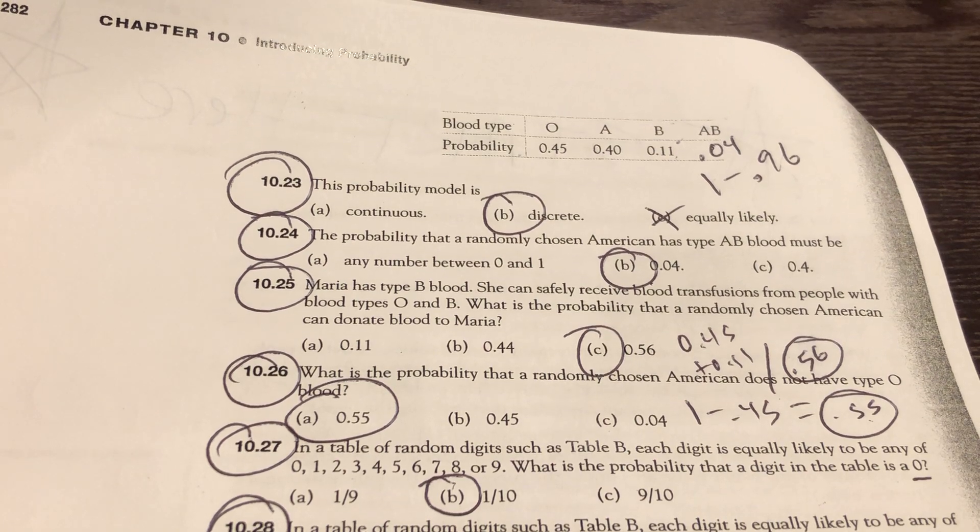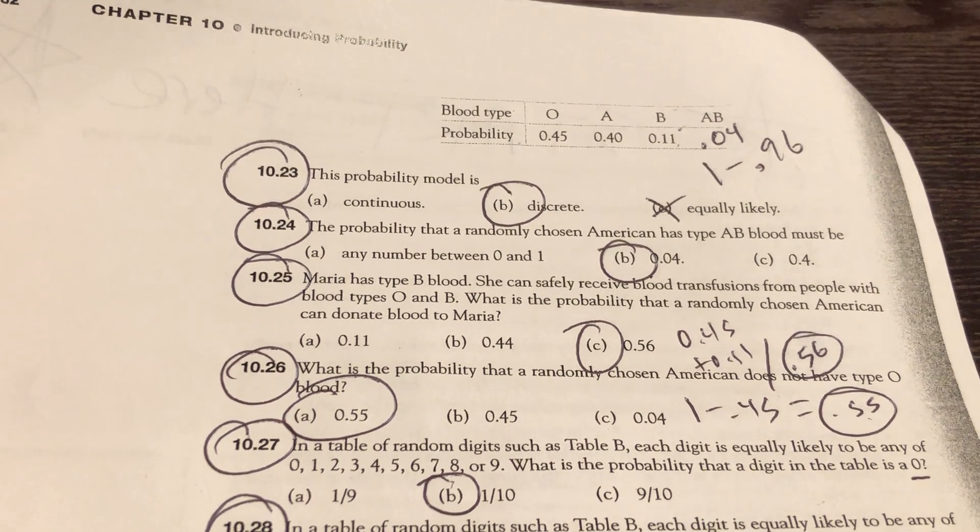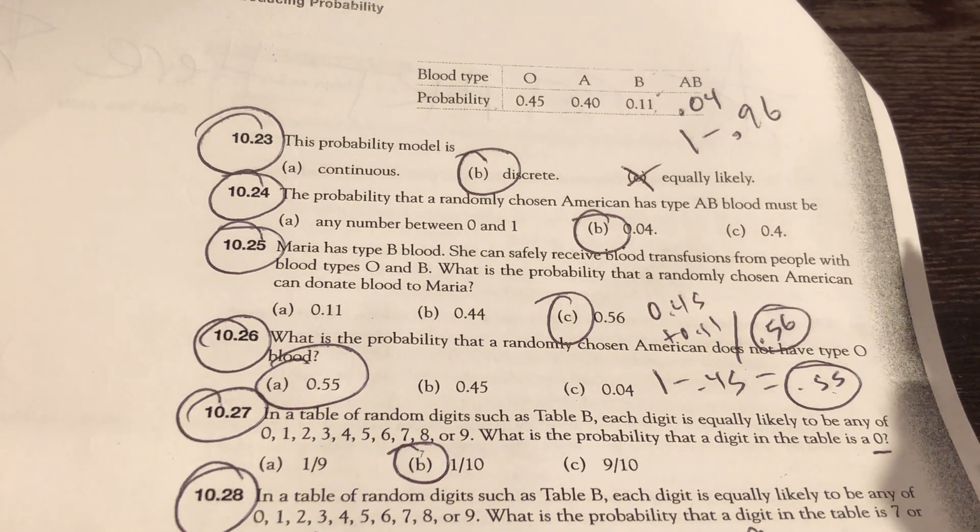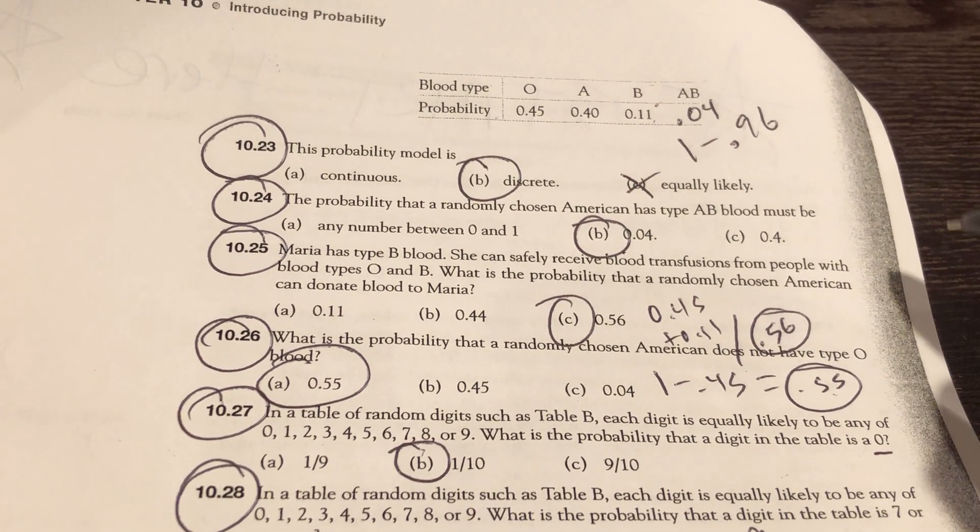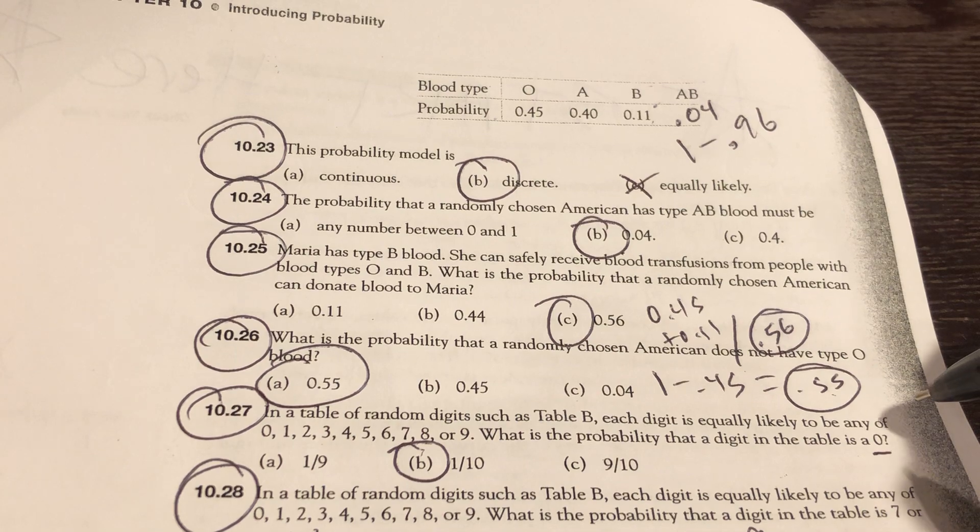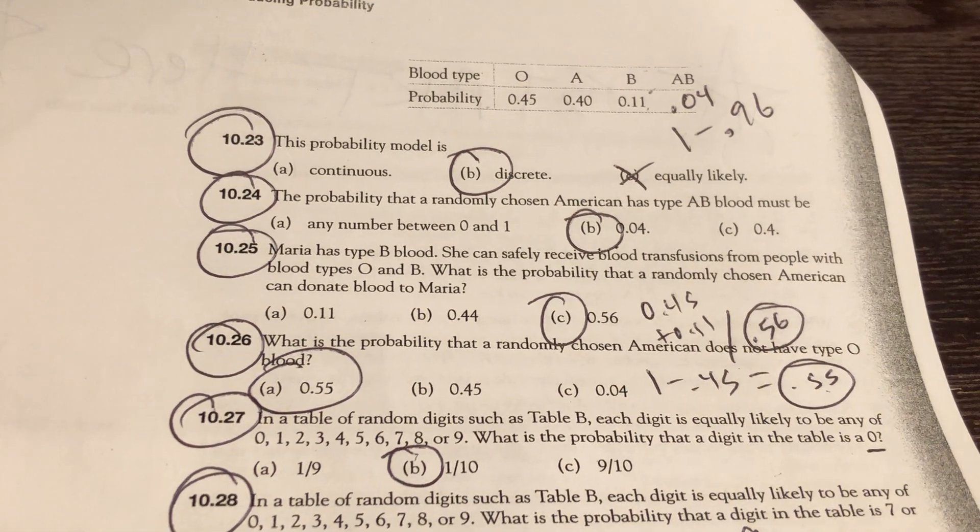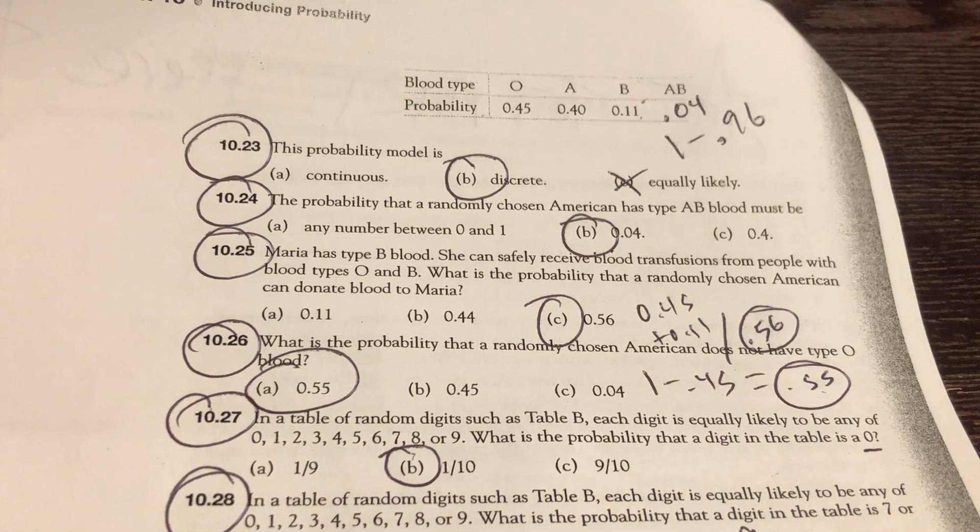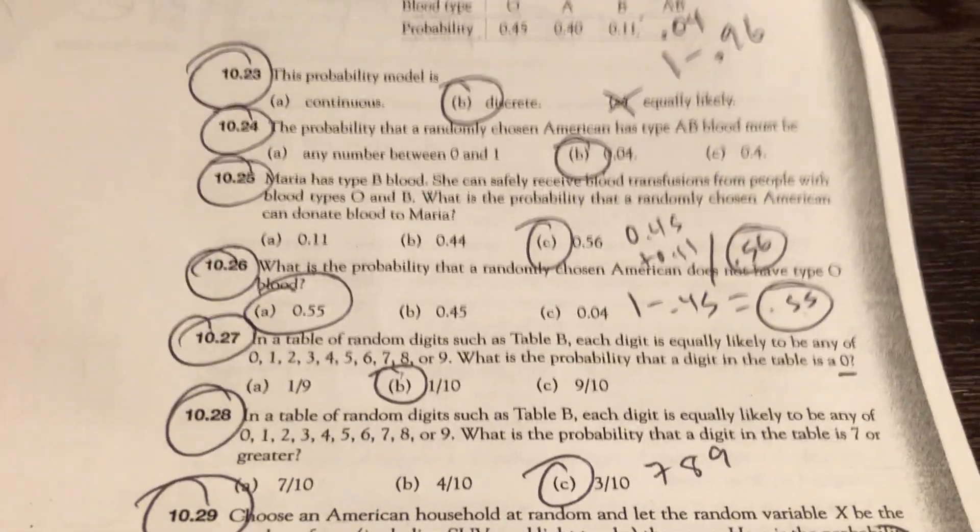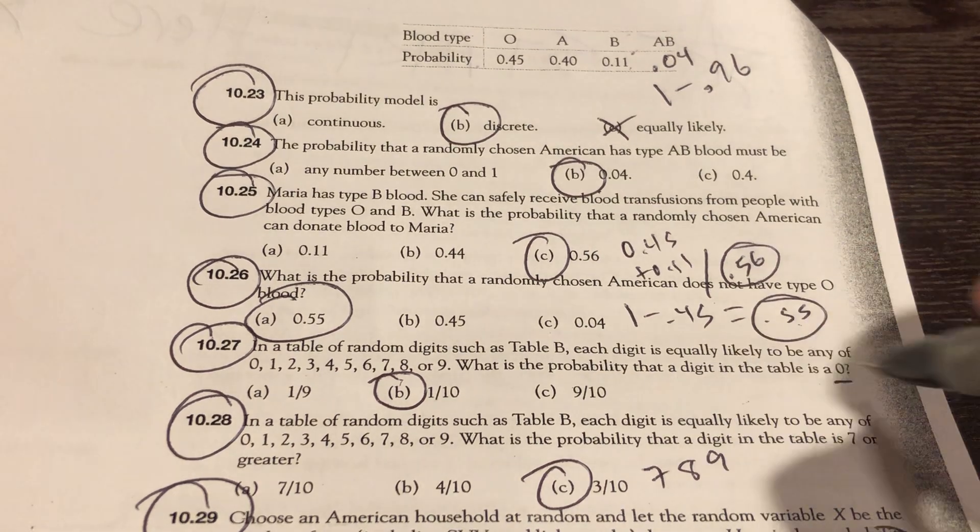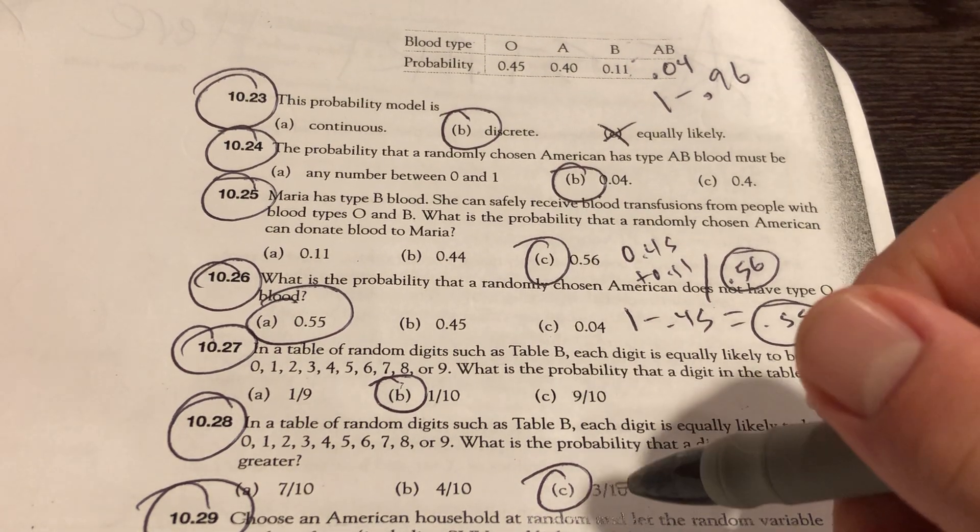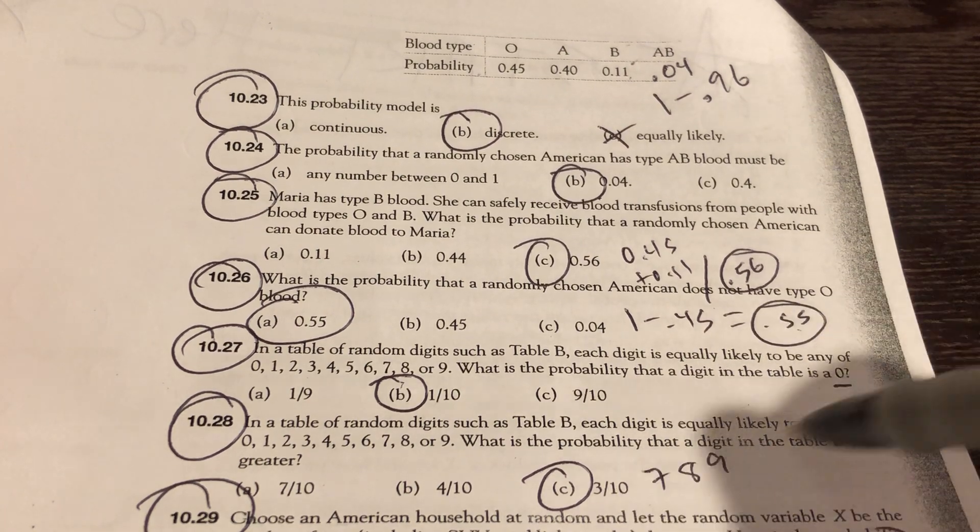In a table of random digits, such as table B, each digit is equally likely to be any of those numbers. What's the probability that a digit in the table is 0? It's 1 out of the 10 choices. And the same table. What's the probability that you're going to have 7 or more? That's going to be 7, 8, or 9. There's no digit 10. That's 3 of the 10.